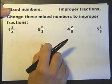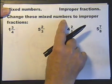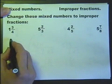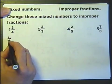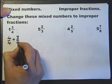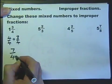Now let's change things back the other way. Change these mixed numbers to improper fractions. So 1 and 3 quarters. The 1 is 4 quarters and the 3 quarters, which all together gives us 7 quarters.